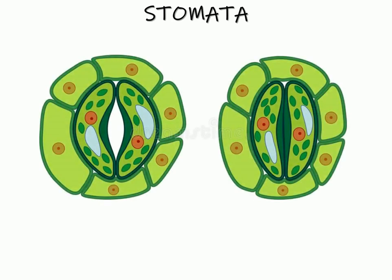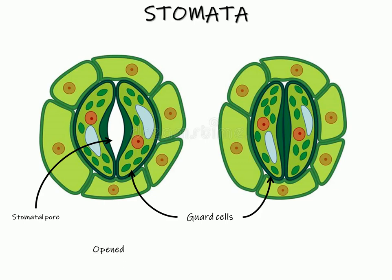Now let us move forward and see stomata. Stomata are tiny pores or microscopic apertures guarded by two kidney-shaped or bean-shaped guard cells. Guard cells are kidney-shaped cells which cover a single stoma and they contain chloroplasts also. The function of guard cells is to regulate the opening and closing of the stoma and also to perform photosynthesis. In the middle of these guard cells, this region is the stomatal pore. When the stomatal pore is slightly opened, the stomata is said to be in open form, and when the stomatal pore is not opened, the stomata is said to be in closed form.